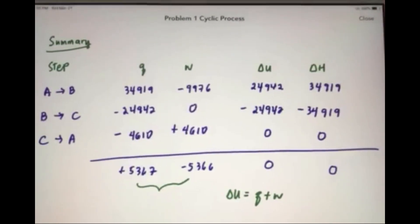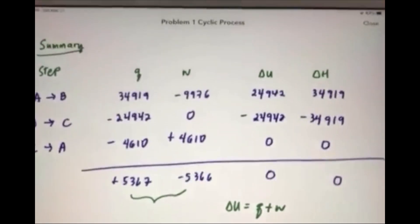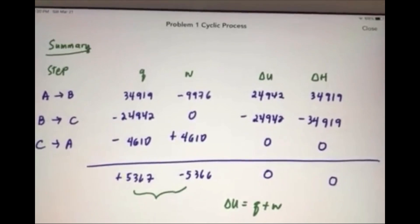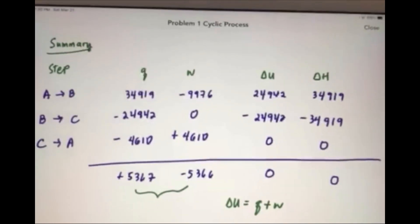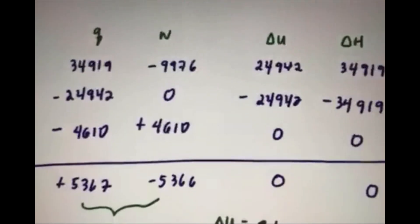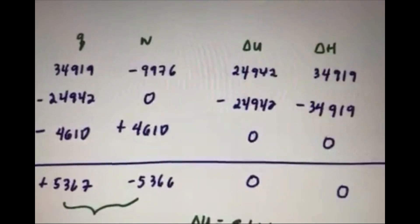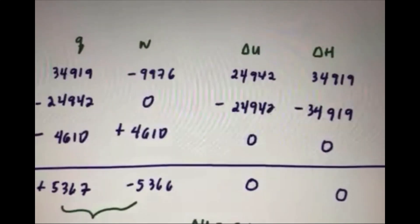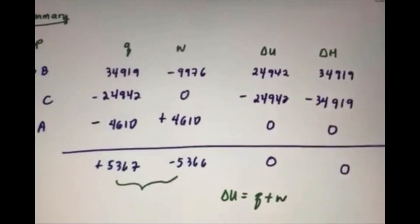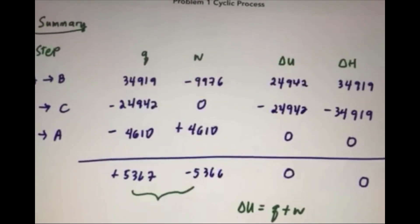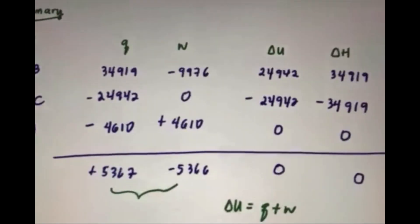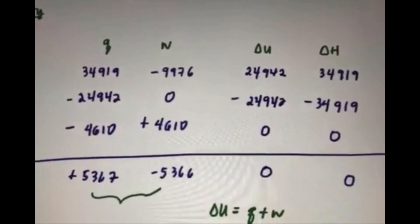In summary, step a to b, q, delta u, delta h, and work. So for q, we have 34,919 joules. Work is equal to negative 9,976 joules. Steps b to c, which is an isochoric process, work is equal to 0. And q equal to delta u, equal to negative 24,942 joules. And delta h, equal to negative 34,919 joules.